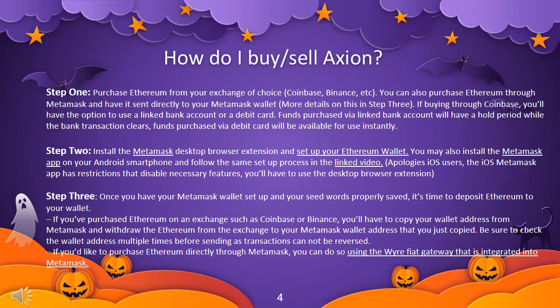Step 3: Once you have your Metamask wallet set up and your seed words properly saved, it's time to deposit Ethereum to your wallet. If you've purchased Ethereum on an exchange such as Coinbase or Binance, you'll have to copy your wallet address from Metamask and withdraw the Ethereum to that address. Be sure to check the wallet address multiple times before sending, as transactions cannot be reversed. If you'd like to purchase Ethereum directly through Metamask, you can do so using their integrated payment gateway.